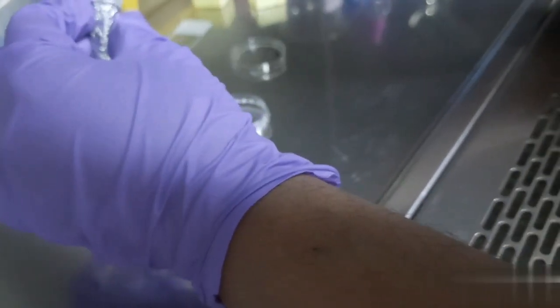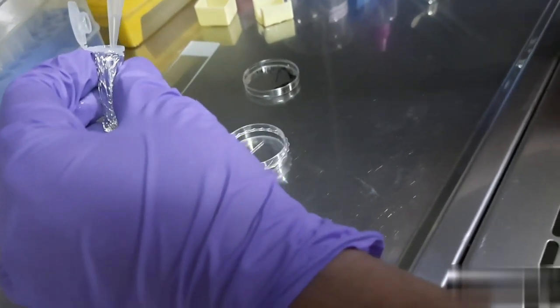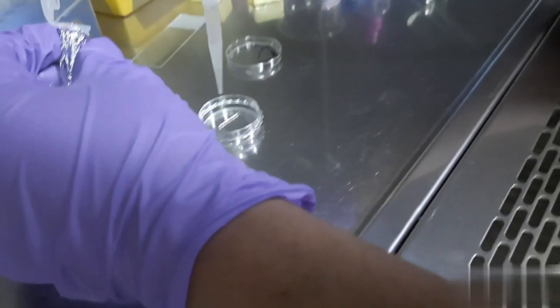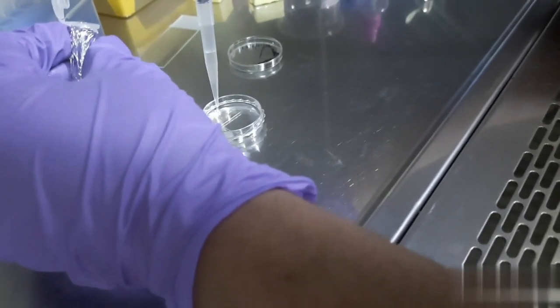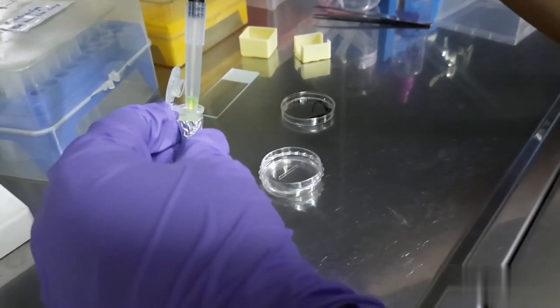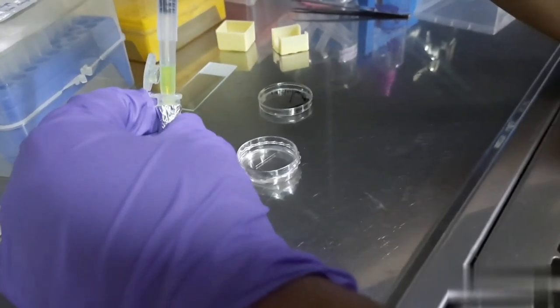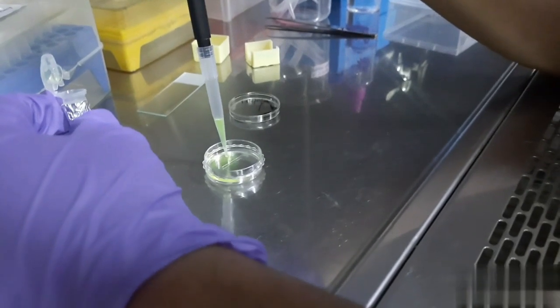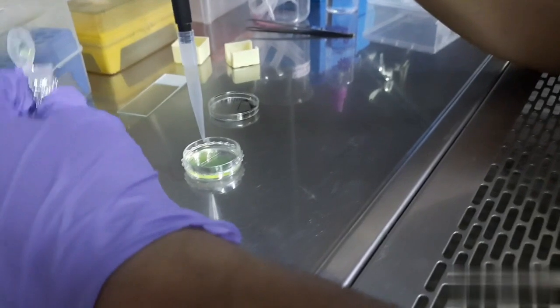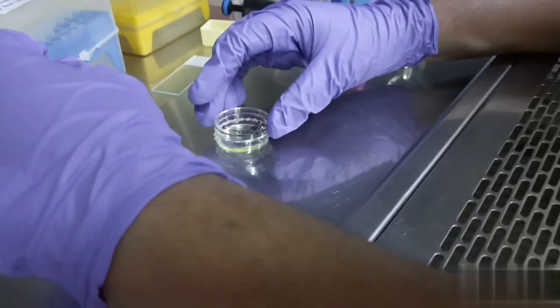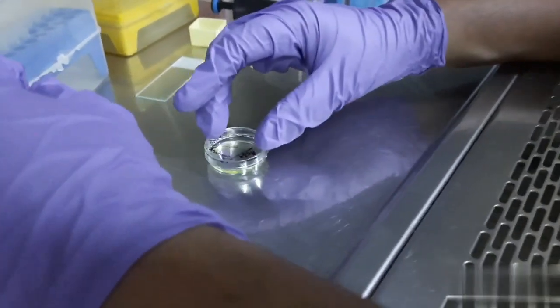I will add 1 ml of propidium iodide, then 1 ml of rhodamine 123, so that the total volume is 2 ml on the petri plate. Try to gently encircle the petri plate so that the cells are equally stained.